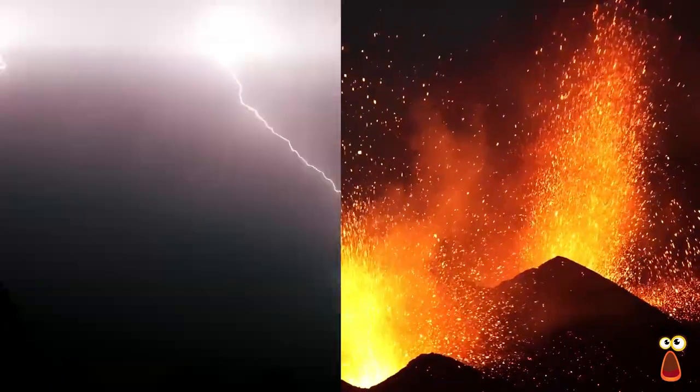But how did these humble ingredients come together to create the first living organism? This is a mystery that has confused scientists for centuries. Some theories suggest that the first spark of life was ignited by lightning strikes or volcanic activity, while others proposed that it was brought to Earth by comets or meteorites.